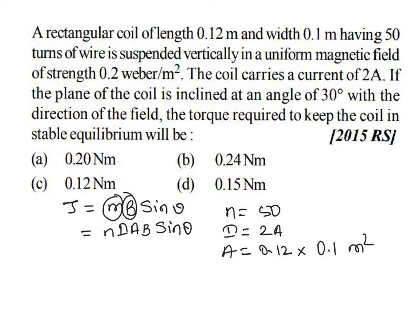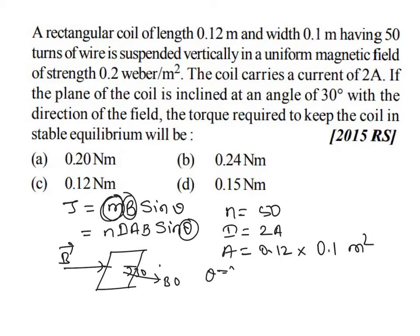Since the plane is inclined at 30 degrees with the field, θ is the angle between the magnetic dipole moment M and the magnetic field. If the angle between the plane of the coil and the magnetic field is 30 degrees, then the angle between the magnetic dipole moment and the magnetic field is 90° − 30° = 60 degrees.